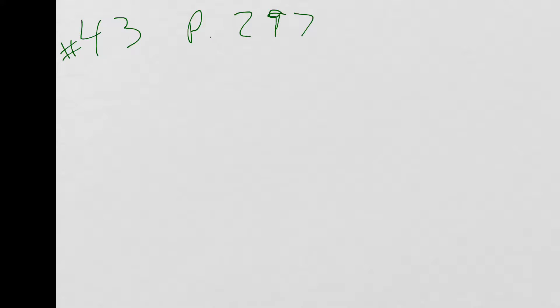Alright class, this is number 43, page 297. I'm going to try and explain this one. It's a pretty difficult concept problem, but I think we can do it here. So, sine of an angle is 1 half. They don't tell us what the angle is.